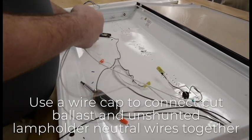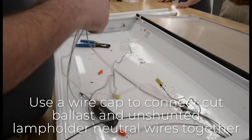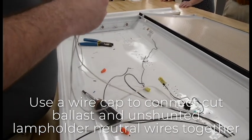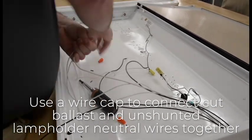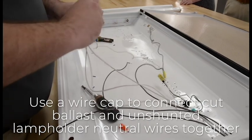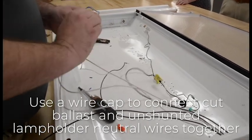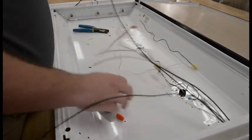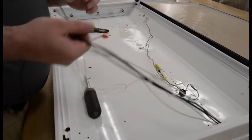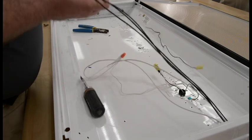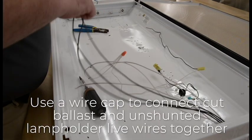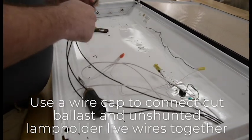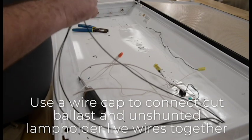On the unshunted lamp holder, connect the neutral wires with the fixture's neutral wires that we previously cut from the ballast using a wire cap. Also connect the live ballast wires to the unshunted lamp holders' live wires using a wire cap.